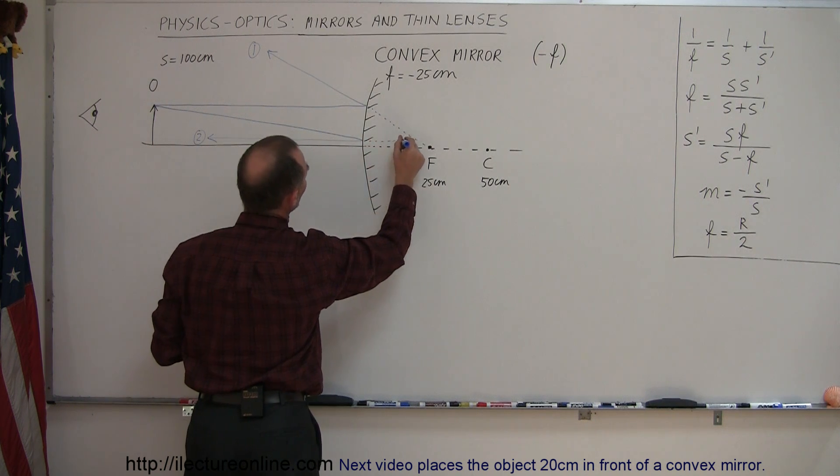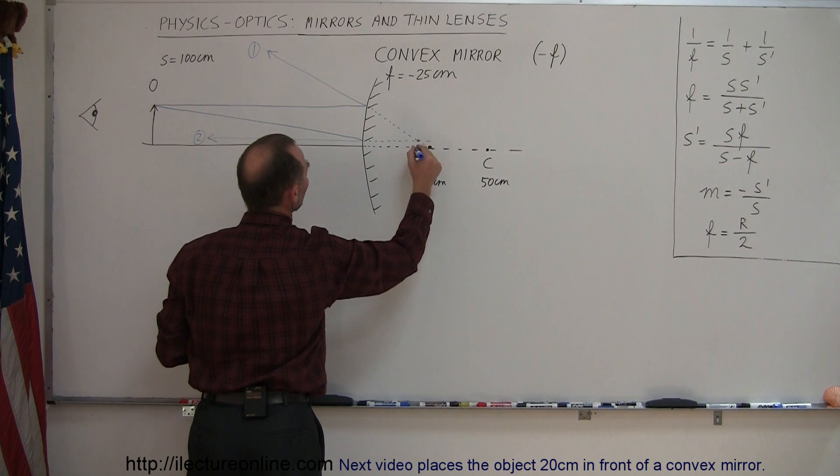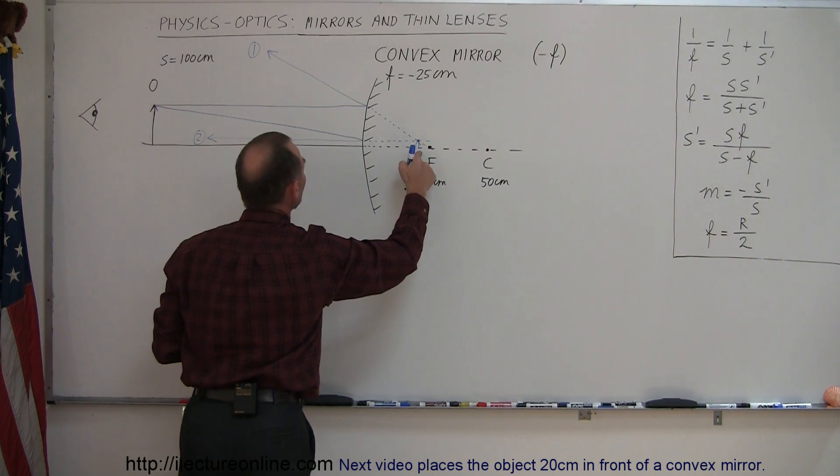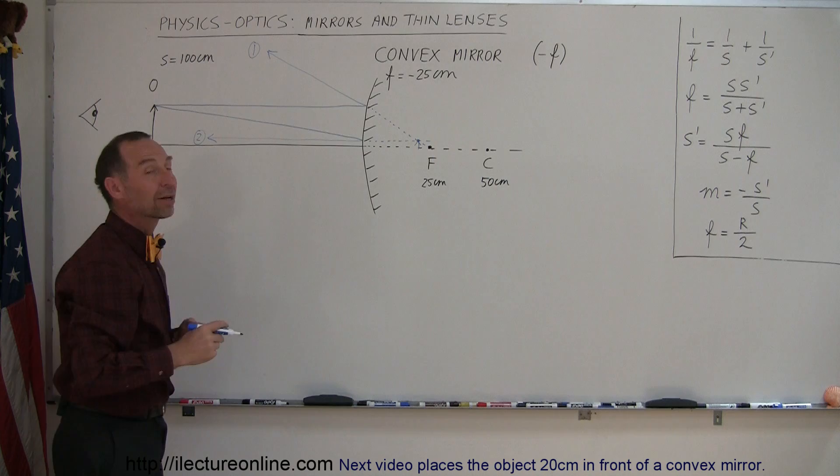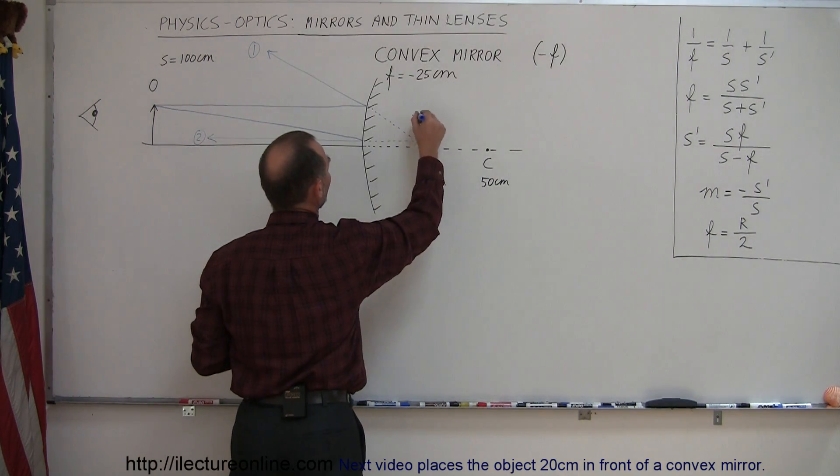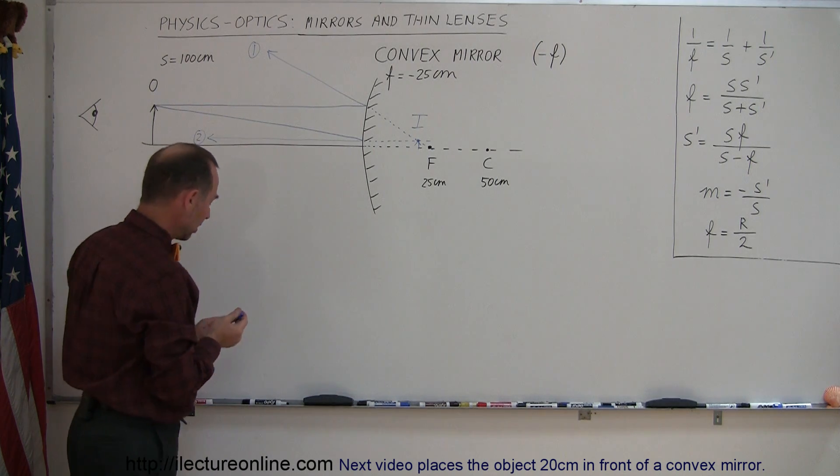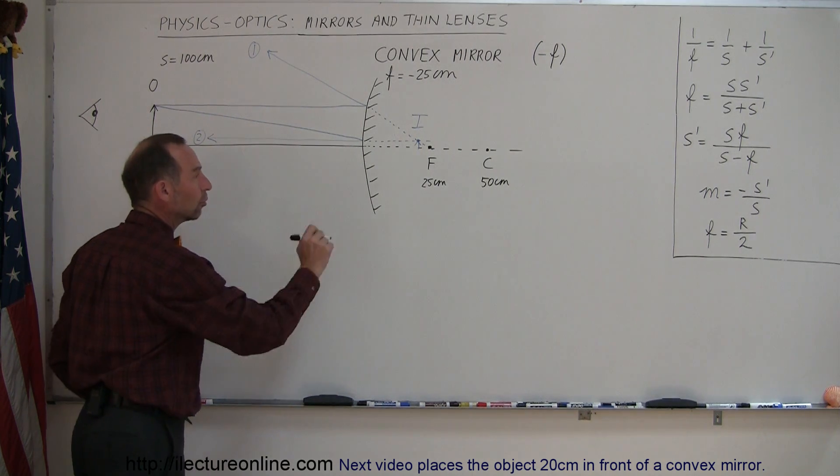this ray comes back here somewhere, and it will appear to the observer that there's an image right here at this location where the two rays appear to be coming from. So that's the location of the image, and now we're going to find what the position of the image is using our equations.